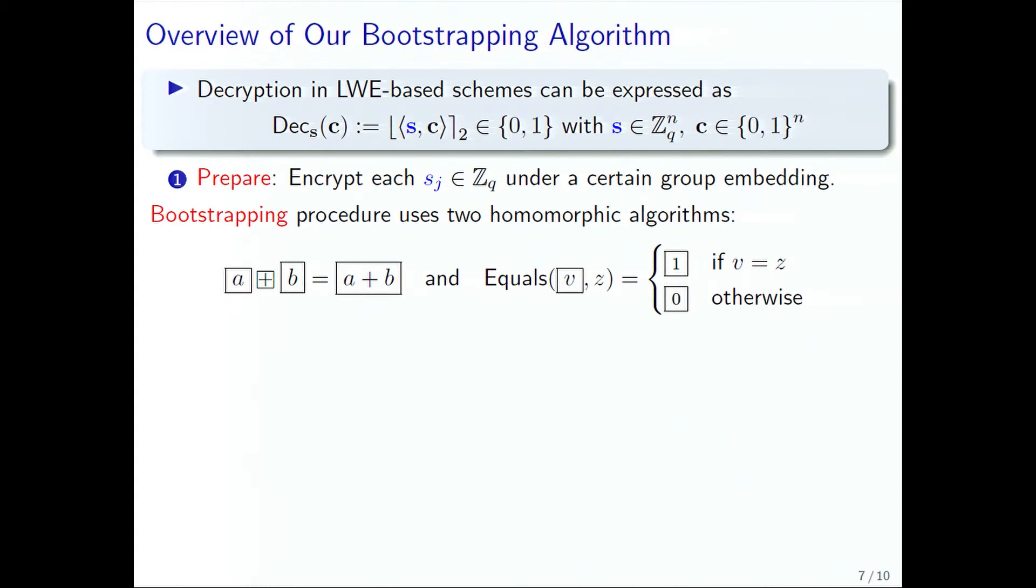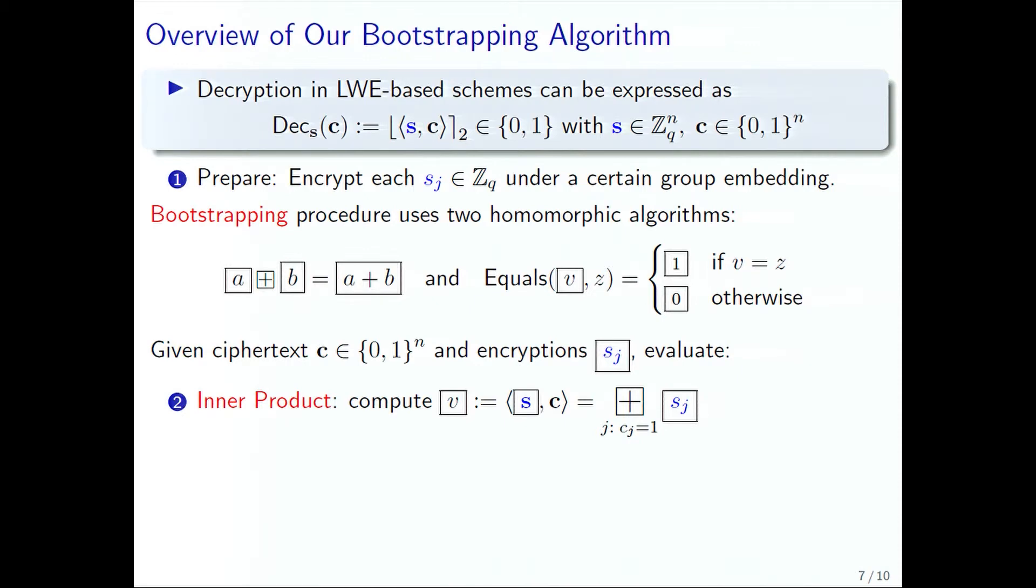The homomorphic sum of A and B is just the encryption of A plus B. The equals operation takes a ciphertext encrypting an integer V and a plaintext integer Z modulo Q, and outputs an encryption of 1 if V equals Z, and encryption of 0 otherwise. Our bootstrapping works by first computing the inner product, which results in a sum of those coordinates of the secret key corresponding to where the ciphertext C equals 1. Then we compute the rounding by checking for each value Z that would round to 1, and we homomorphically sum all of these together.